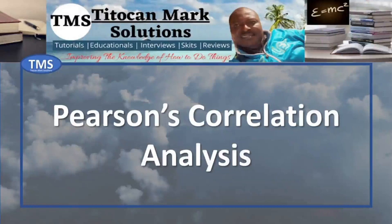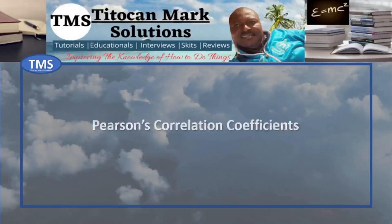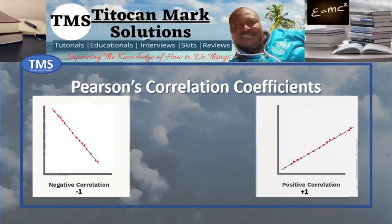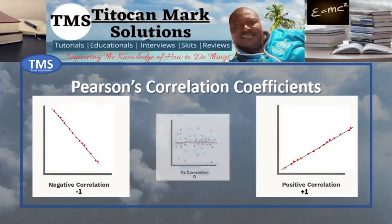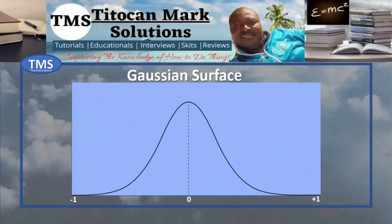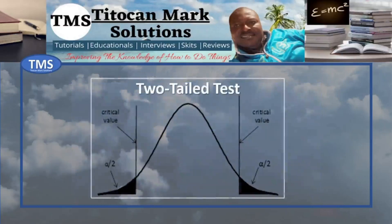Pearson's correlation is the statistical analysis that measures the strength and duration of the relationship between two variables. It is denoted by the small letter r. The correlation coefficient lies between minus 1 for a negative correlation and plus 1 for a positive correlation, with a midpoint of 0 where no correlation exists. This expression is synonymous with the Gaussian surface, which typically makes correlation analysis a two-tailed test.